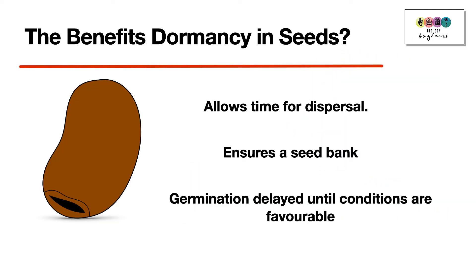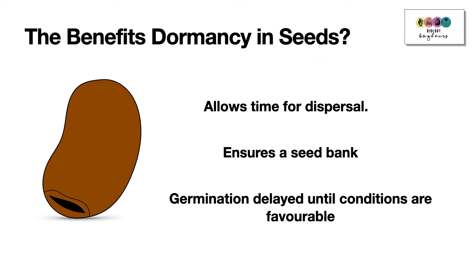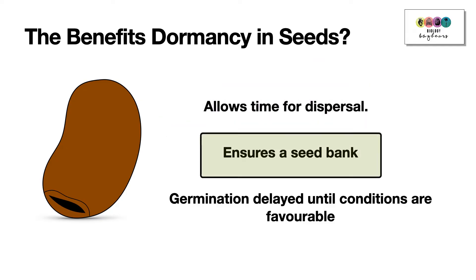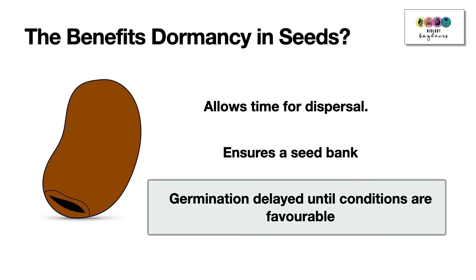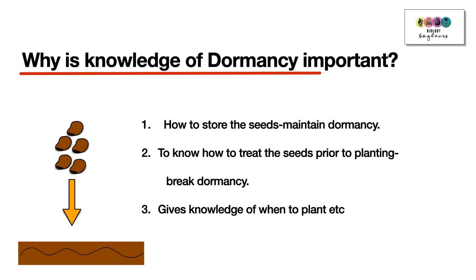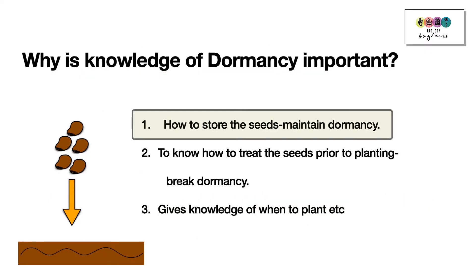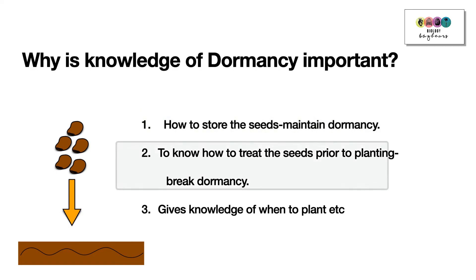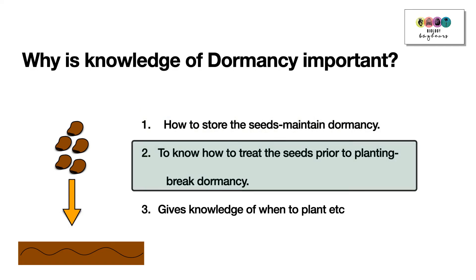There are benefits to dormancy. Firstly, it allows time for dispersal of the seed. It ensures the seed bank, because not every seed will germinate at once. It also delays germination until conditions are more favourable, giving the plant a better chance of survival. Farmers and gardeners need to know about dormancy — how to store seeds to maintain it, how to break it, and what conditions are necessary, all of which informs when to plant.